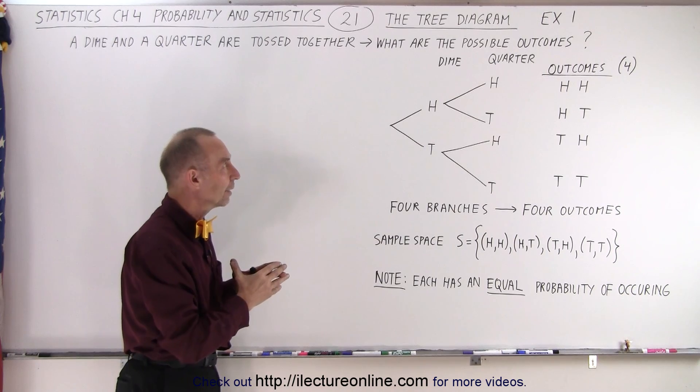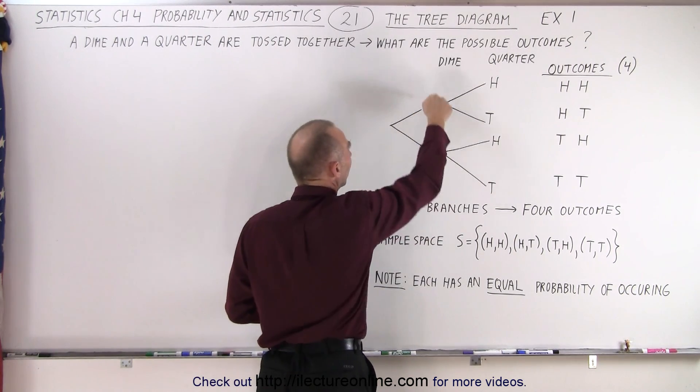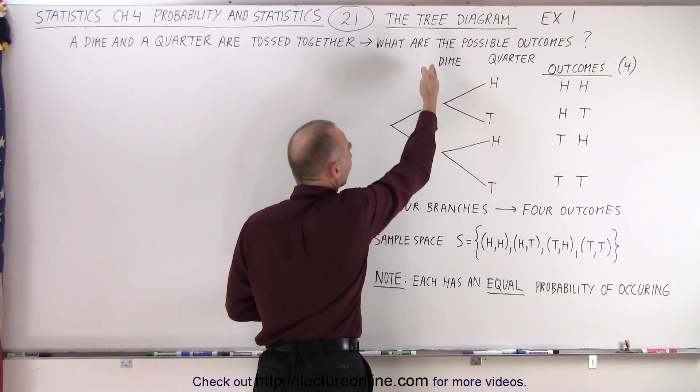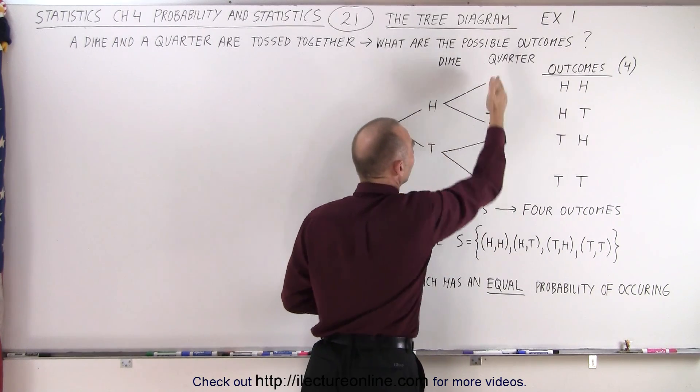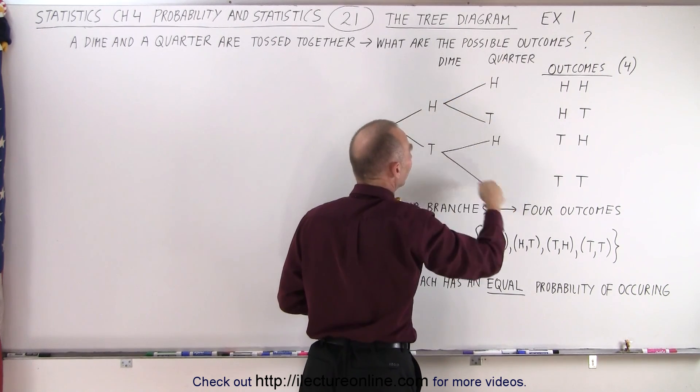So this shows us the approach: we first branch out and show all the possibilities for the first coin, the dime, and then all the possibilities for the second coin, the quarter. And then we look at all the various branches.